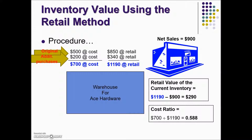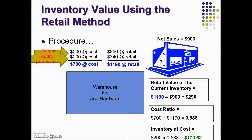We next find the cost ratio. So we take our cost of our inventory during this period divided by the retail, which gives us this ratio. To determine the inventory at cost, we take our retail value of our current inventory and multiply it by the cost ratio. That gives us our inventory at cost.